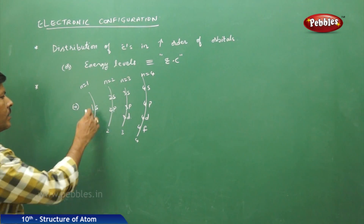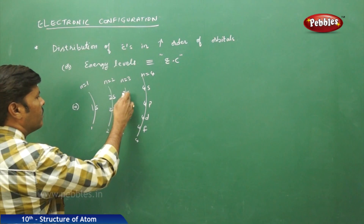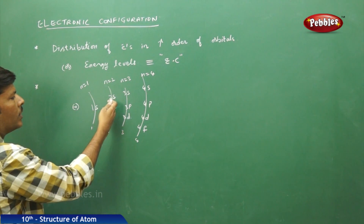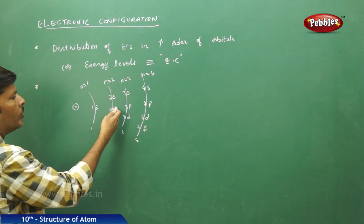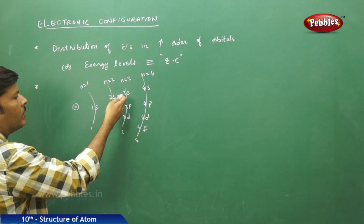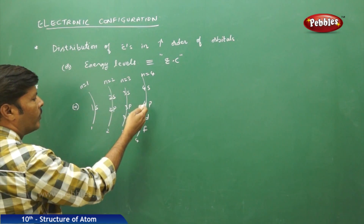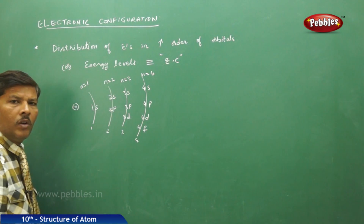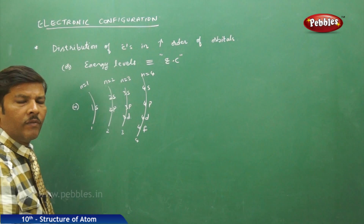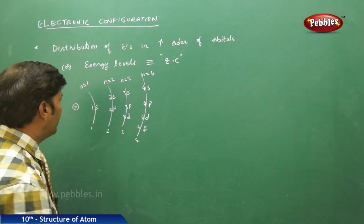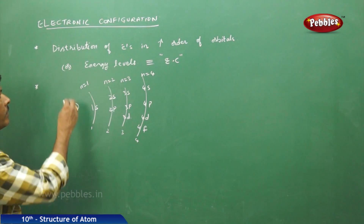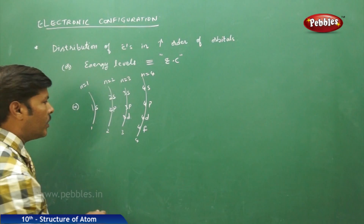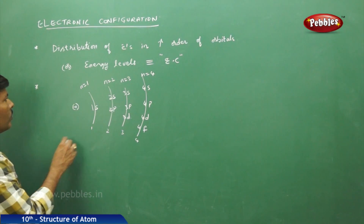These are all different energy levels — the 1s, 2s, 2p, 3s, 3p, 3d, 4s, 4p, 4d, and 4f orbitals — and these are the various orbitals in which electrons can be accommodated.